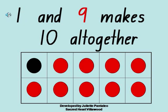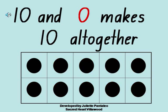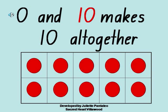1 and 9 makes 10 altogether. 10 and 0 makes 10 altogether. 0 and 10 makes 10 altogether.